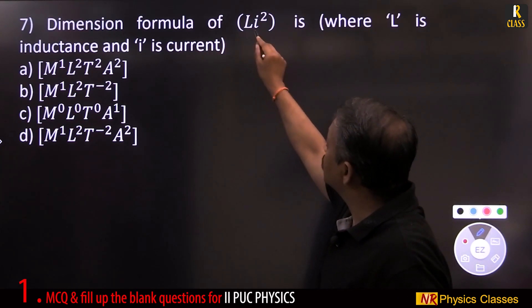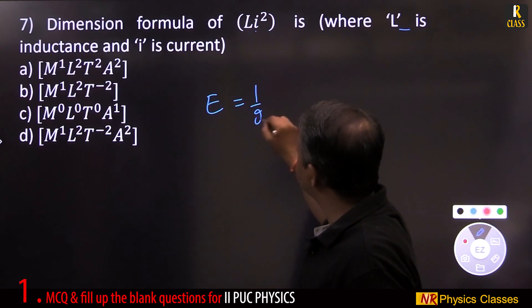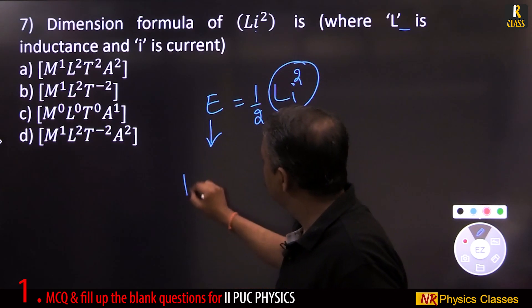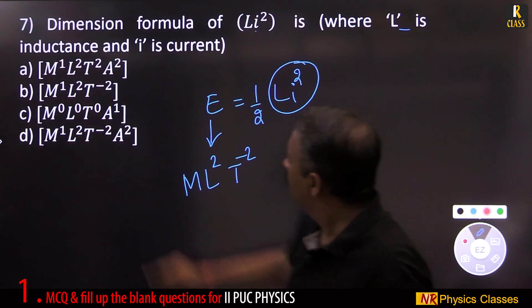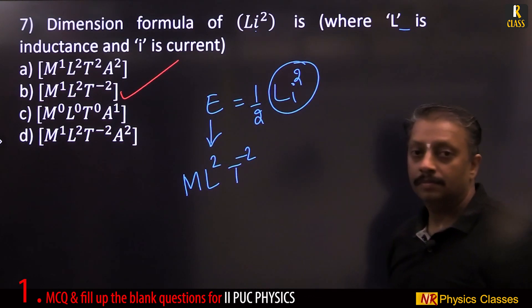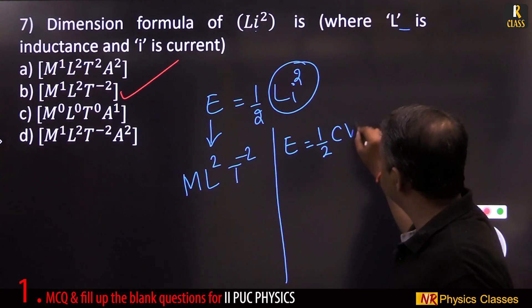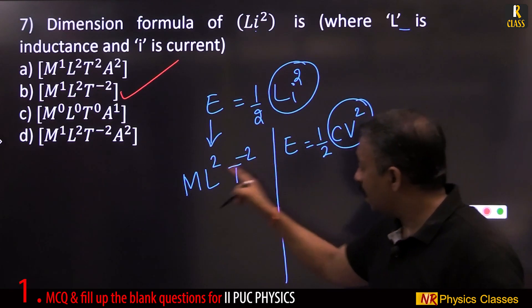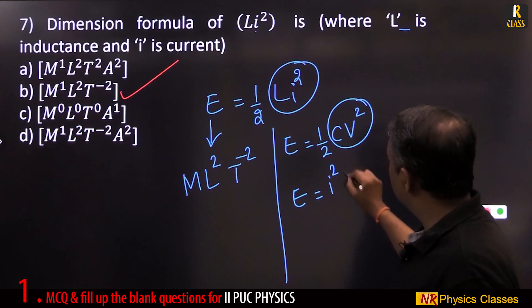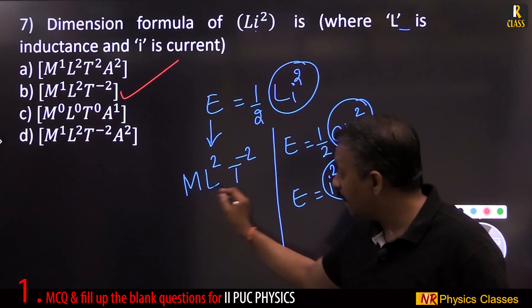Dimensional formula of Li square, where L is inductance and I is current. Energy is half Li square. So this gives energy. Energy is mL2 t minus 2. Similarly, in the case of capacitor, energy is given by half Cv square. Unit of Cv square is Joule, dimensional formula is this. With respect to resistor, energy equal to i square r into t. So unit of i square r into t is Joule mL2 t minus 2.